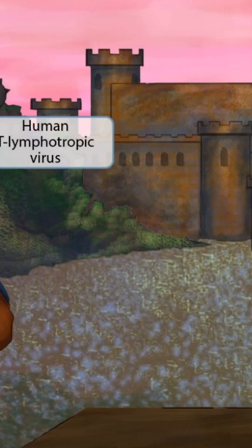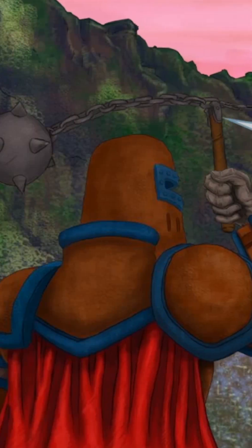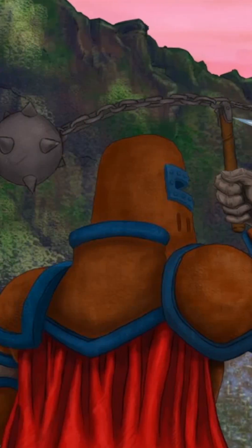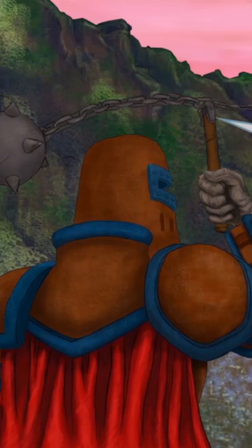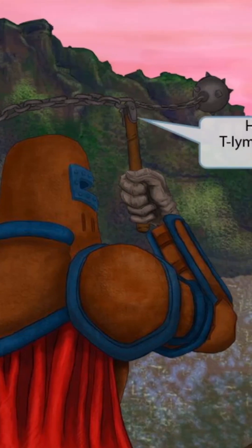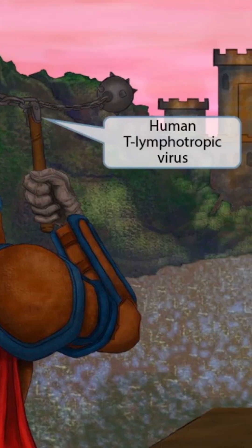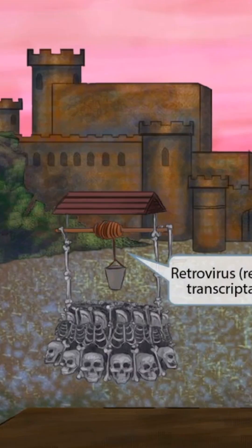This scene takes place back during the time of castles and knights. As you can see, front and center, there's a noble knight with a two-sided flail shaped like a T. The T-shaped flail in the knight's hand should help you remember that this is an image about human T lymphotropic virus.